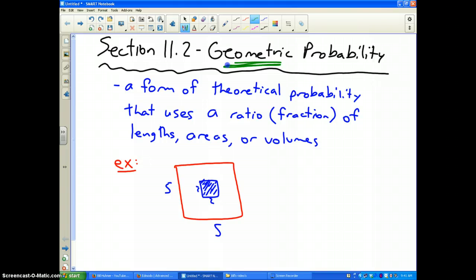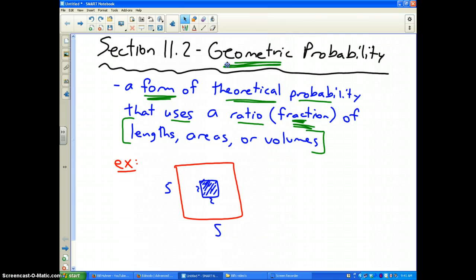I'm almost positive they'll have geometric probability problems on it. What is it? Well, geometric probability is a form of theoretical probability that uses ratios, which means fraction, of lengths, areas, or volumes.